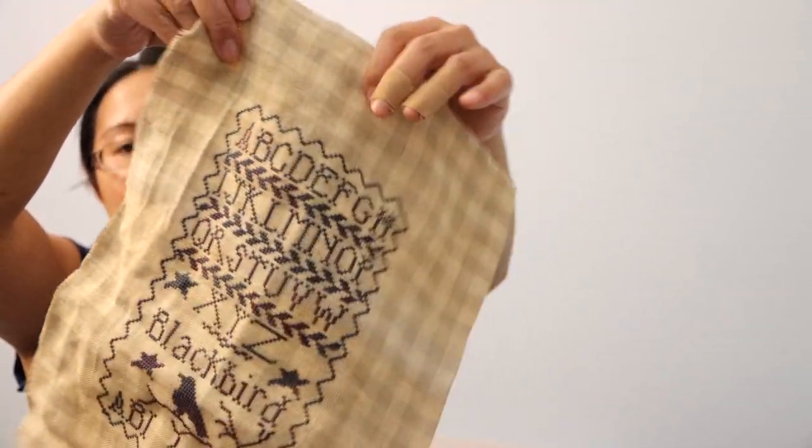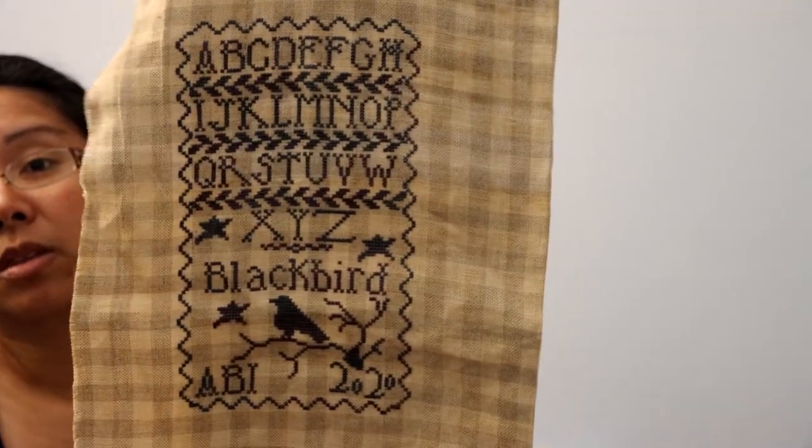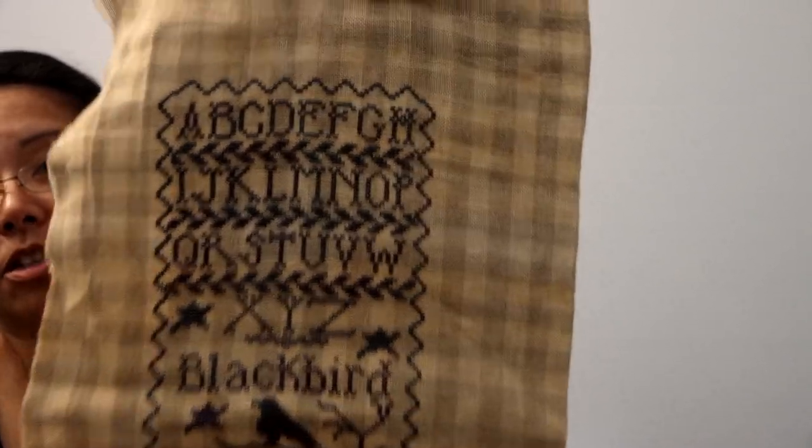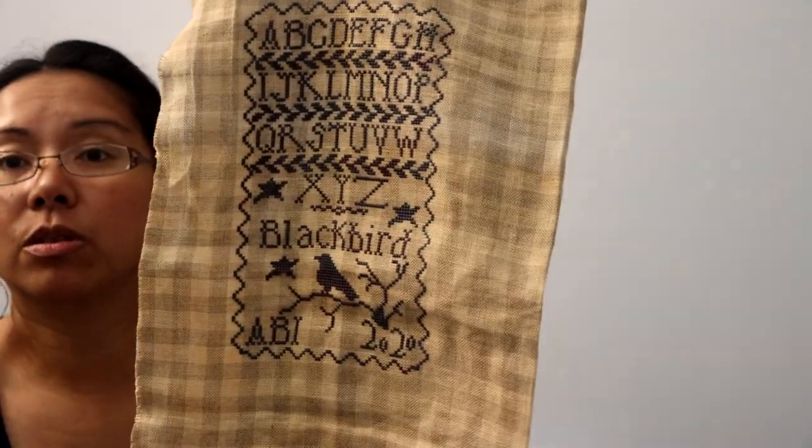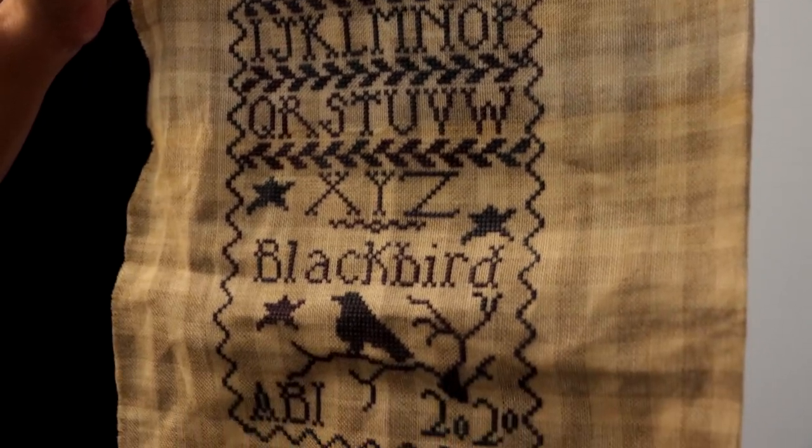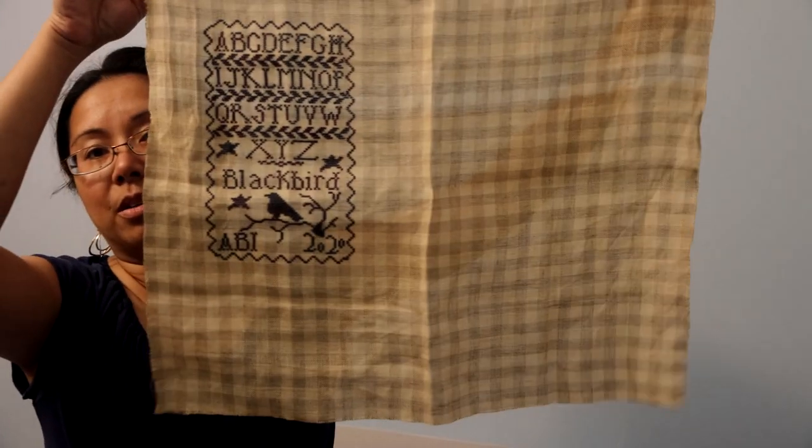All right, so that was finish number 11. Finish number 12 is Blackbird's First Offering by Blackbird Design. I stitched it on, I think it's 28 count Gingham by Nikki's Creations, and the floss is Waterlilies Dark Shadows. So two strands over two. It turned out really, really nice. I really like it. That was super fun. And I have left all the fabric. I typically don't cut the fabric until I'm ready to fully finish the project.